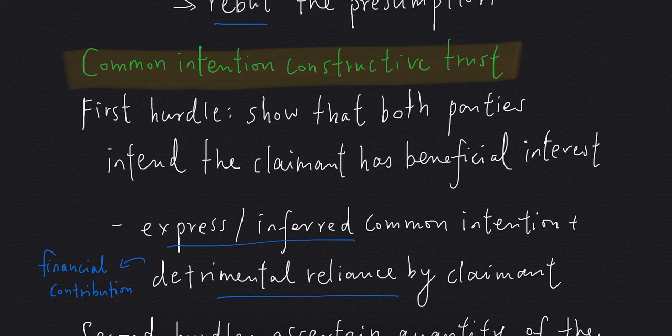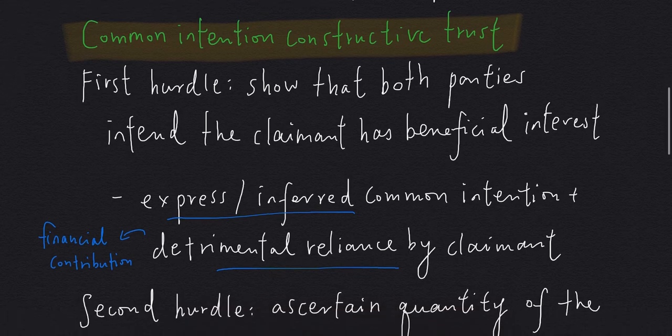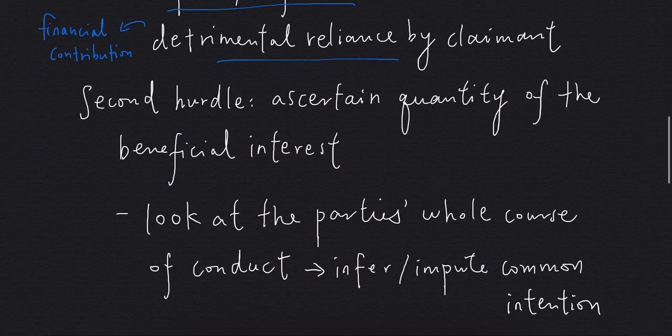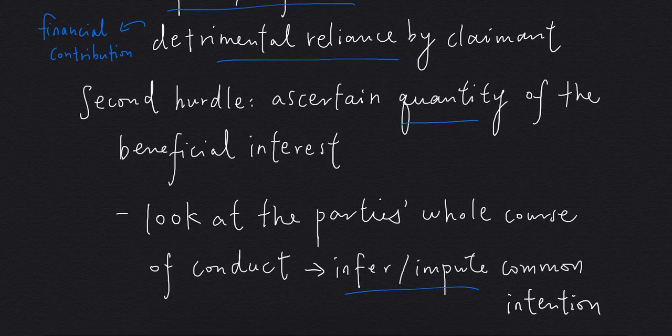Financial contribution to the property can be treated as detrimental reliance. So having established these two elements, we move on to the second hurdle. That is to ascertain the quantity of the beneficial interest. We have to look at the party's whole course of conduct to infer or impute Common Intention as to the quantity of each of their shares.